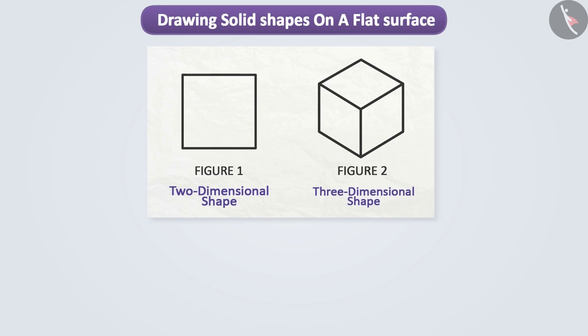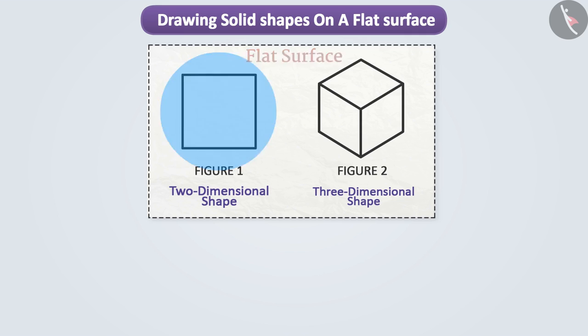Here both the figures are drawn on the same flat surface. Yet we can easily tell which shapes are two-dimensional and which are three-dimensional. Can you explain why?